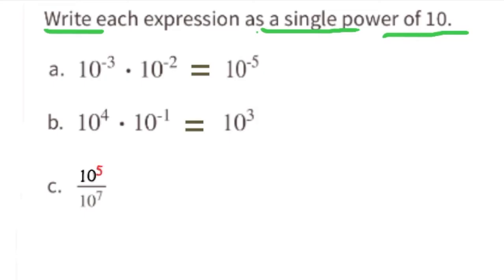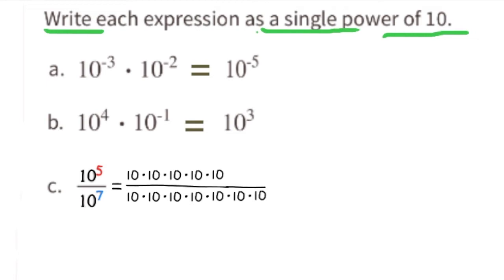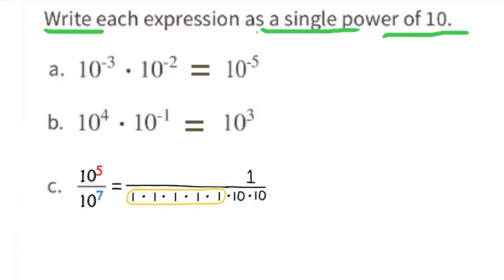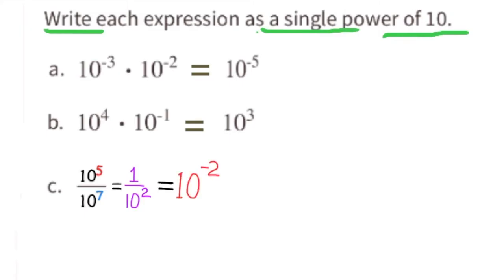Part C: 10 to the power of 5 over 10 to the power of 7. On top we have 10 times itself 5 times; on the bottom, 10 times itself 7 times. Canceling pairs of 10s leaves 1 over 10 × 10, which is 1 over 10 to the power of 2. Written as a single power of 10, this is 10 to the power of negative 2.